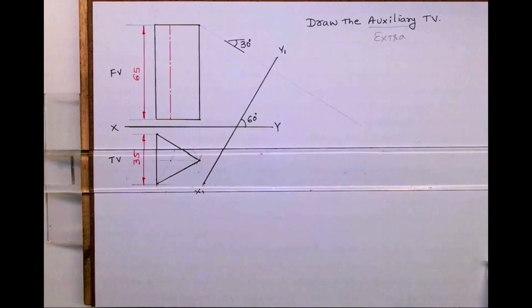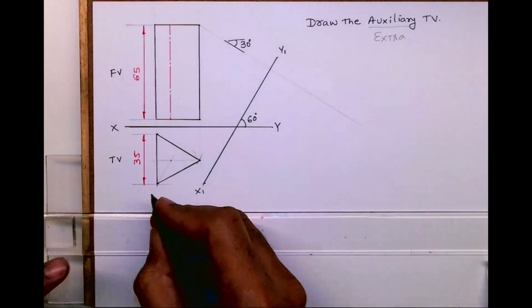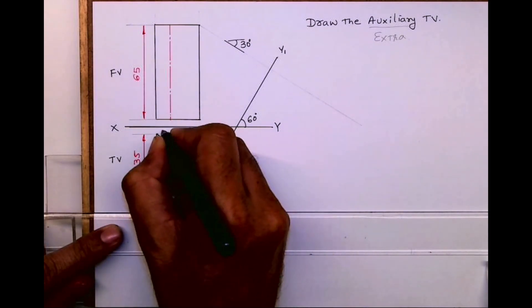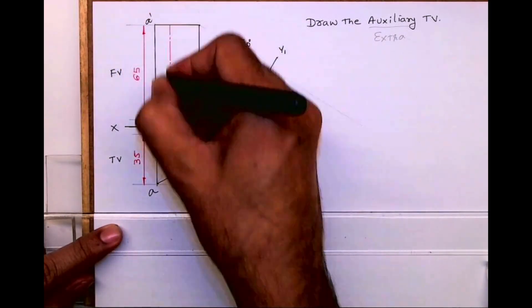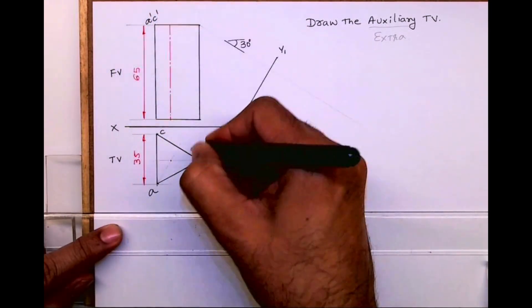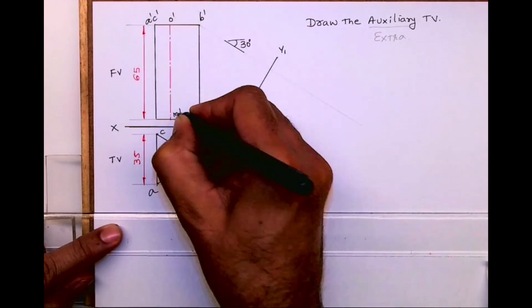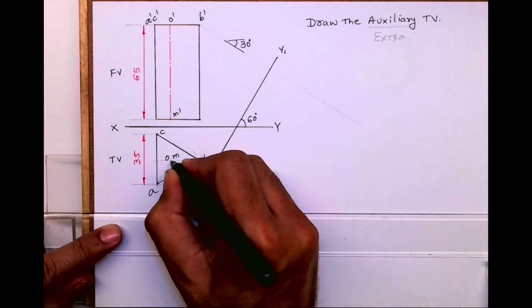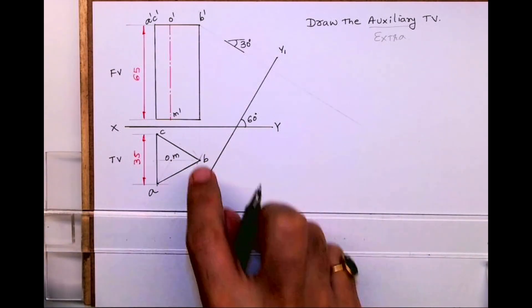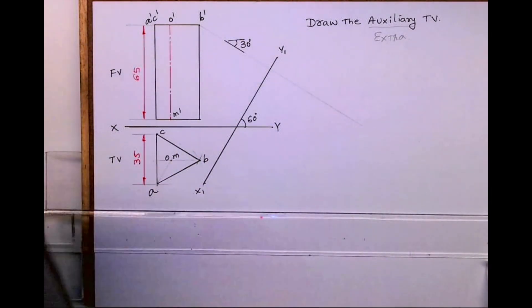So now for auxiliary top view, what I need to do? I need to project from front view. First I will name this object ABC, triangular parallel prism. A dash, C dash, and B dash. This is O dash M dash, this is axis. Now what I will do, I will project from front view.